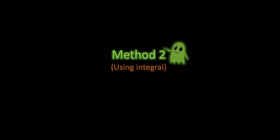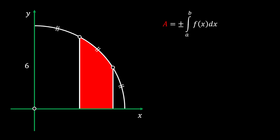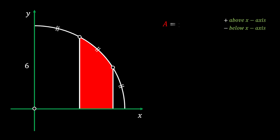Now let me show you method number two, which is a completely different one. It will use the integral in order to find our red shaded area. We are going to start this method by adding the XY coordinate system to our sketch. This coordinate system will have its origin at the center of our quarter circle. We can use the integral to find the area underneath our curve. On this integral you can see a plus and a minus sign — the plus sign is used if the area is above the x-axis, and the minus if below. In our case the area is clearly above the x-axis so we are going to use the integral with the plus sign.